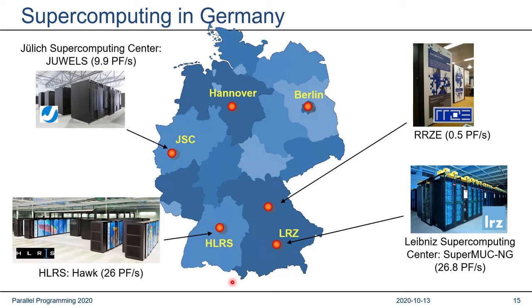Here's an overview of supercomputing centers in Germany. There are three federal centers — in Jülich, Stuttgart, and Garching near Munich — which provide cycles to scientists across Germany and Europe. Their peak performance numbers are indicated on the slide. In Erlangen, we have two larger production systems with a performance of roughly half a petaflop, which is more than an order of magnitude below the current top systems in Germany, although a larger system will be installed next year.